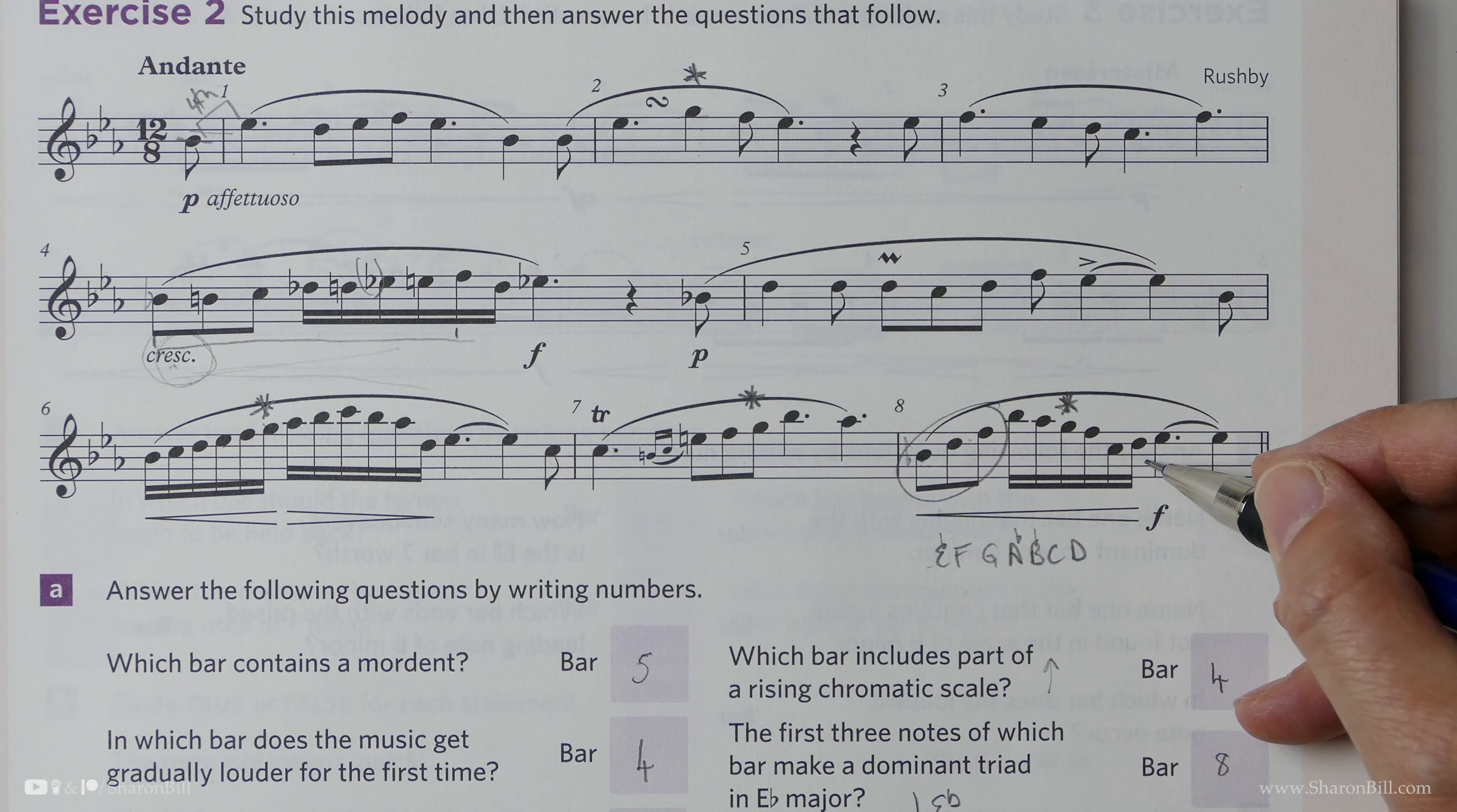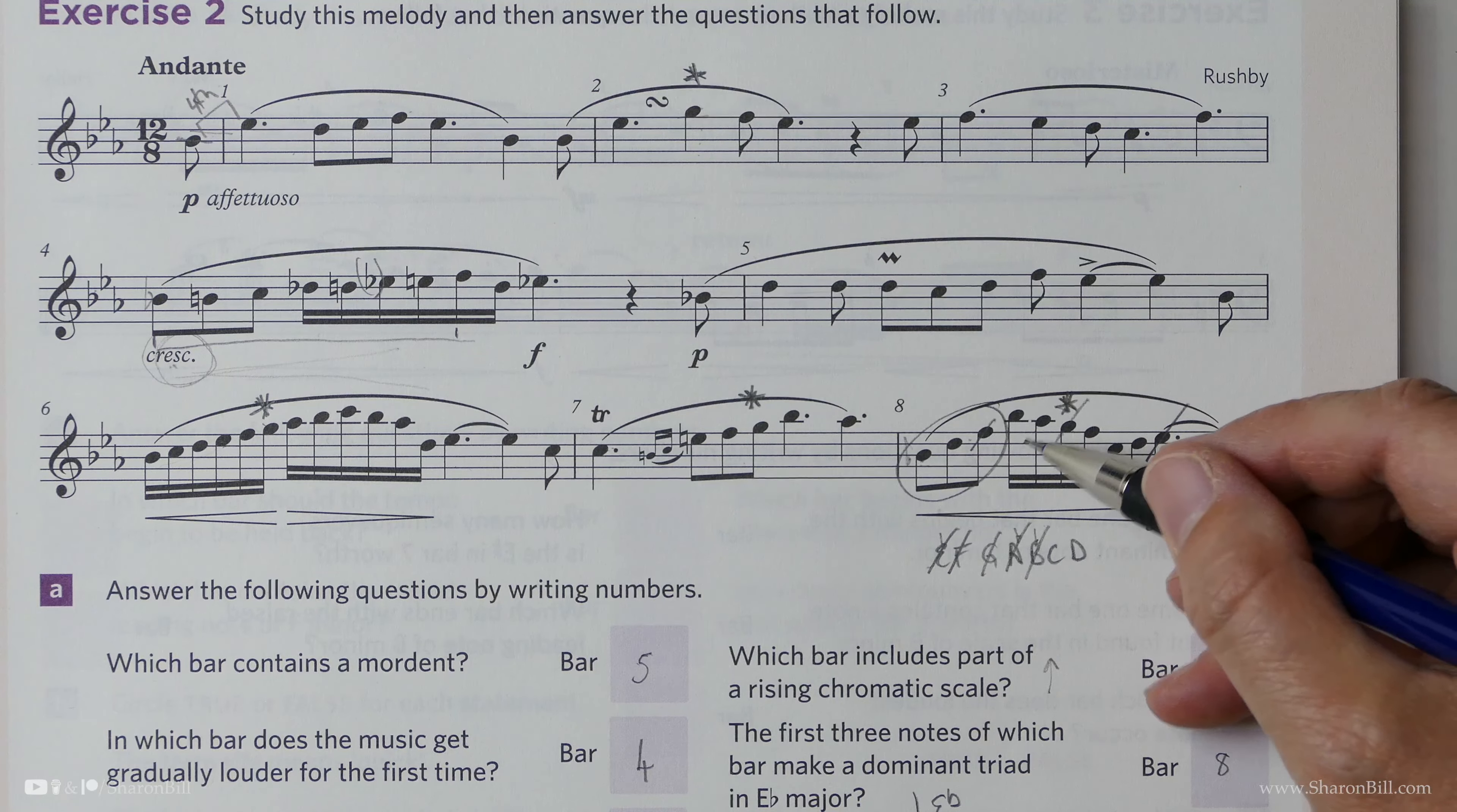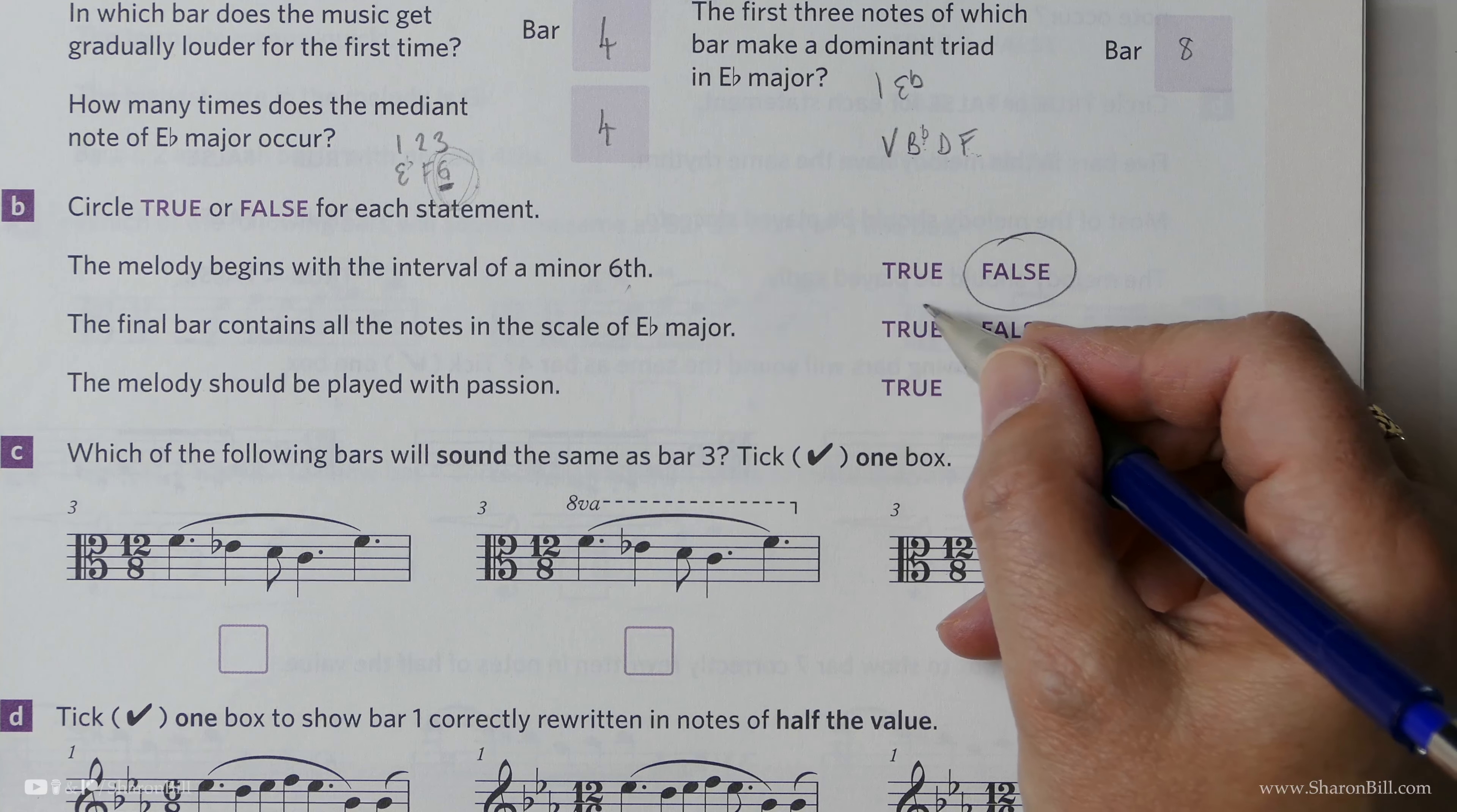So we have an E-flat. There we have an F. We do have a G. We've already spotted that. We have an A and a B. A-flat and B-flat, of course. The key signature will deal with that. There's a note C. And there's a note D. So yes, we do have every single note, albeit in a different order, but the scale is all present.